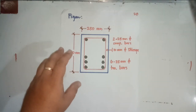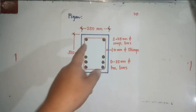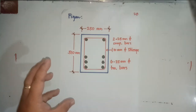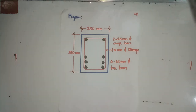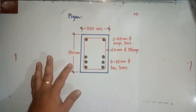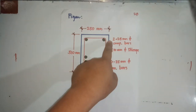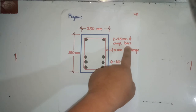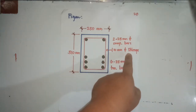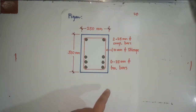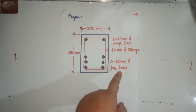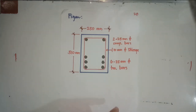The final section for Example 1 is 250mm × 510mm (or 525mm rounded). At the top: 2 × 25mm diameter compression bars with 10mm stirrups. At the bottom: 6 × 25mm diameter tension bars in 3 layers of 2. That completes Example 1.